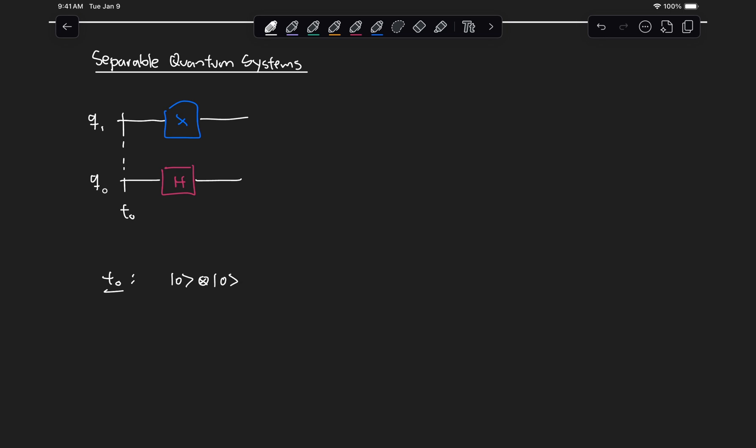And this will be for our state q1, q0, which, as we know, is a column vector 1, 0, 0, 0. And then since these two systems don't interact with each other, well, at t1, we can just basically represent this as q1, q0.